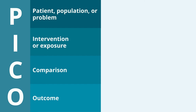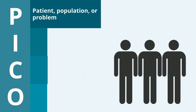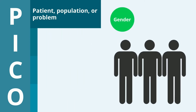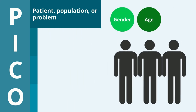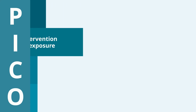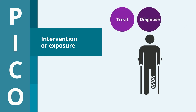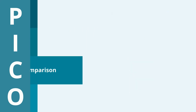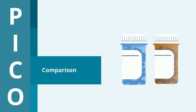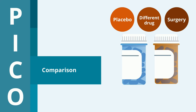For example, for Patient, Population, or Problem: what are the characteristics of the patient or the population? What is the situation or disease you're interested in? For Intervention or Exposure: what do you want to do with the patient, person, or population? For example, treat, diagnose, or observe? For Comparison: what is the alternative to the intervention? For example, placebo, a different drug, or surgery?